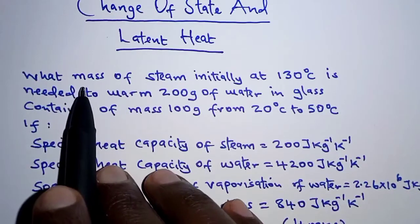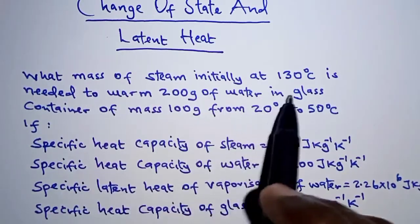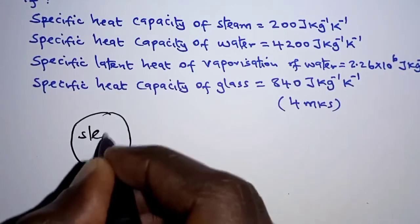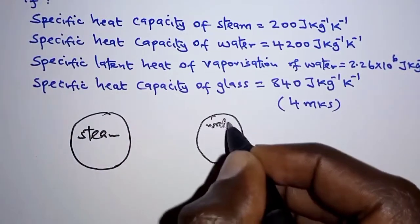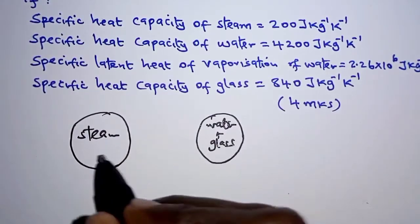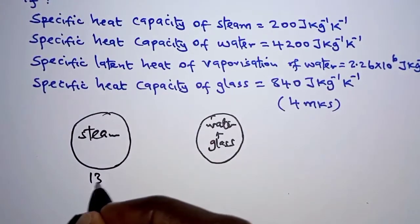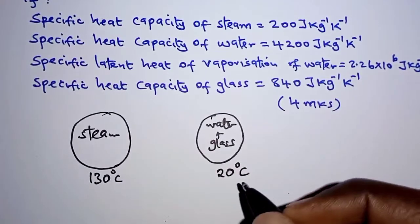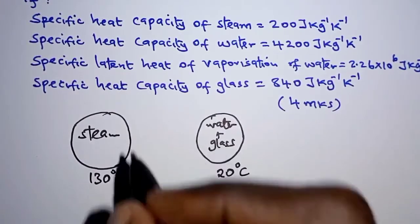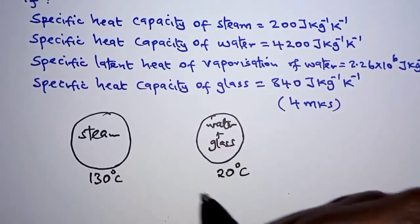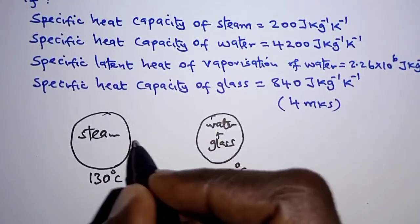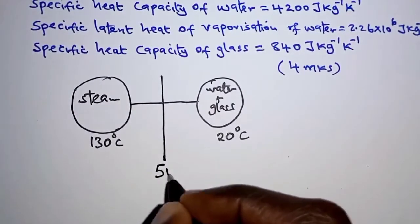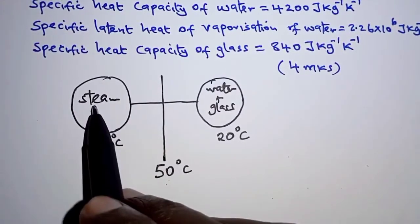Let us interpret this. We have steam passed through water in a glass container. Steam is at 130 degrees Celsius; water and glass are at 20 degrees Celsius. When the two are brought together, steam will lose heat to water and glass, and water and glass will gain that heat, until they arrive at a temperature of 50 degrees Celsius.